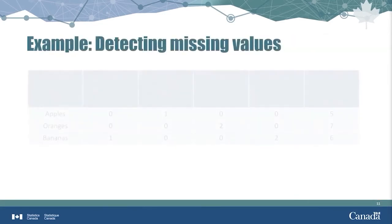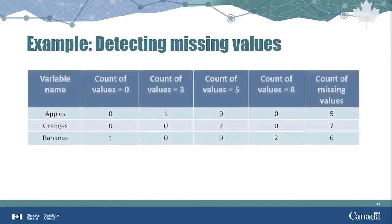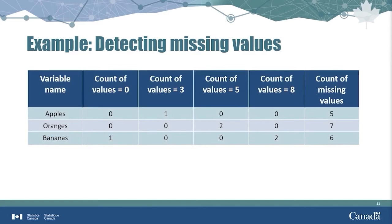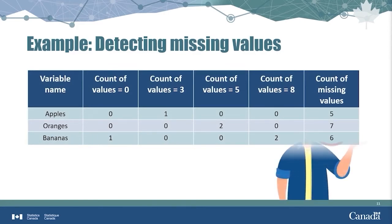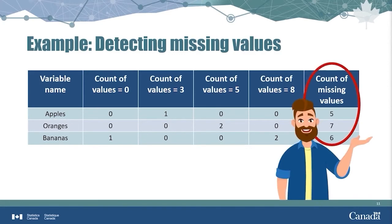In this example, we created a frequency distribution table of the values for three variables: apples, oranges, and bananas. The column on the far right shows how many times there were missing values for each of these three variables. Remember that missing values are not the same as values equal to zero. In this example, there are a lot of missing values relative to the number of non-missing values, so we would probably want to try to fill them in before using this data.